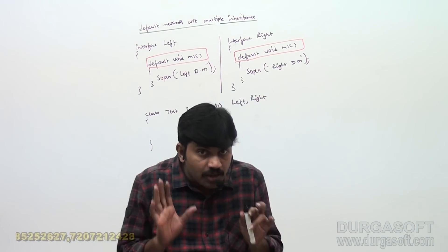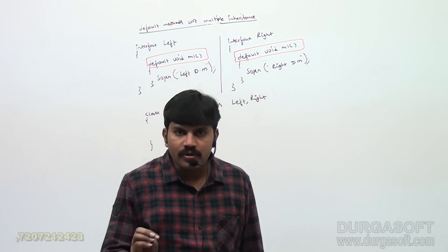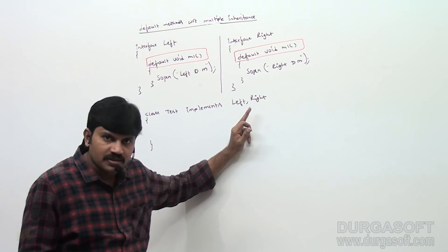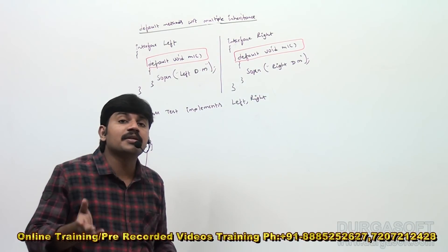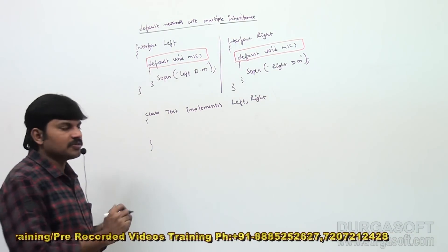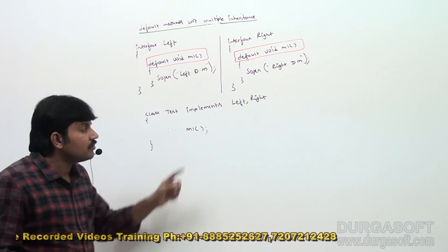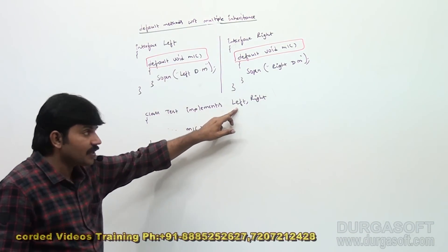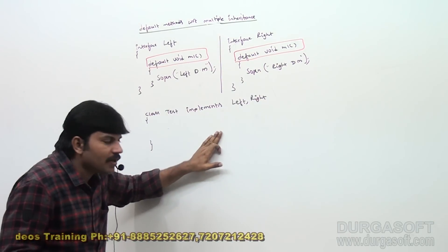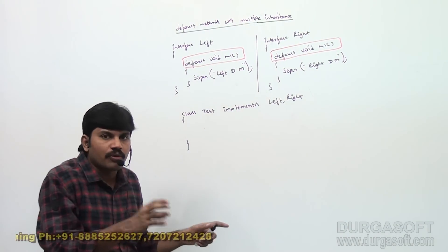So in multiple inheritance, if a class implements multiple interfaces and two interfaces contain a default method with the same signature, then there may be a chance of an ambiguity problem. Suppose somewhere I call m1 — which m1 method should come? One m1 is coming from Left, another from Right. Which m1 method is required to execute? Yes, that is the problem. Let me first execute and show the error.